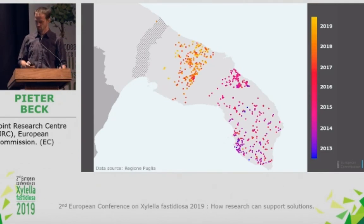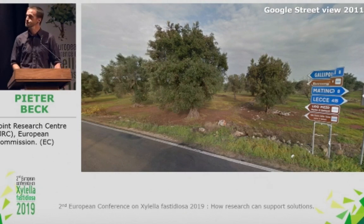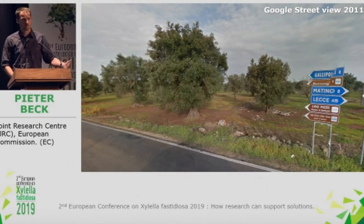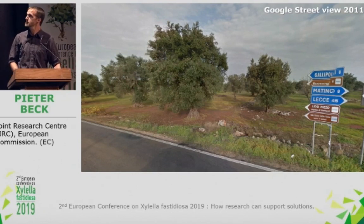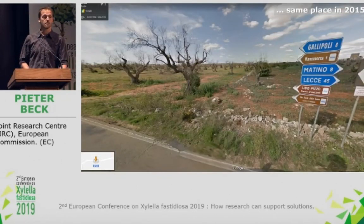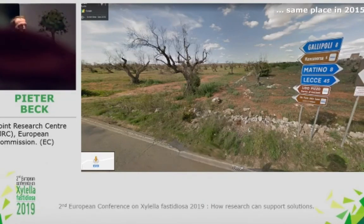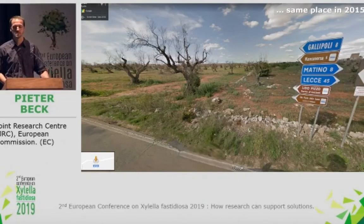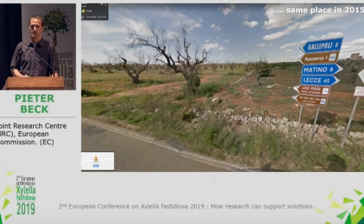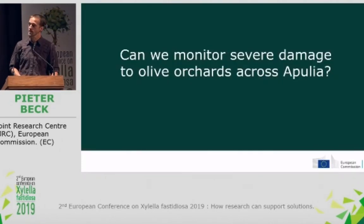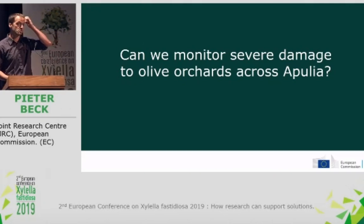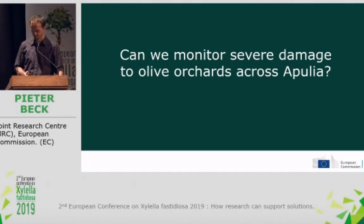We know the damage is there. You can see it if you go there. You can see it in Google Earth. But we don't really know very precisely how big it extends, which is important if you want to assess the impact of Xylella at larger scales. So the question we're trying to answer is: can we monitor severe damage to olive orchards across Apulia?